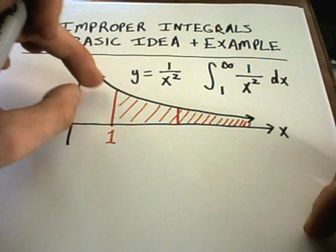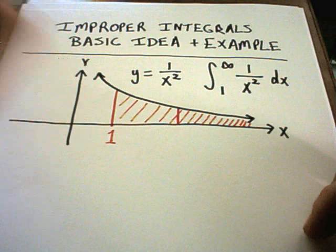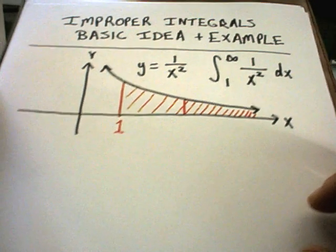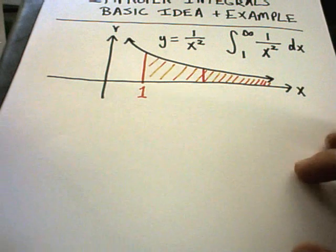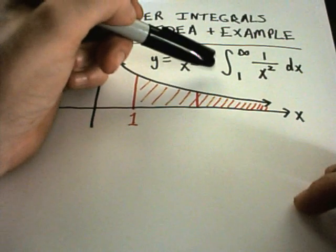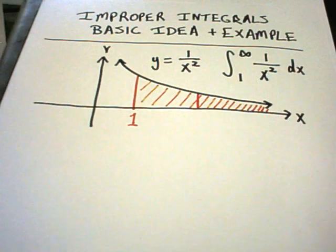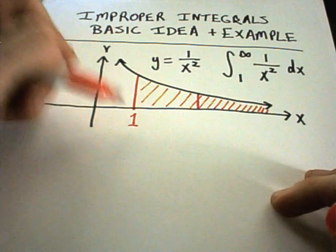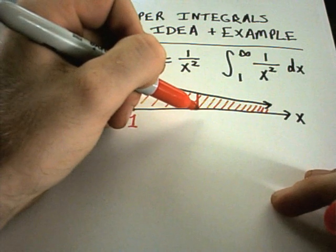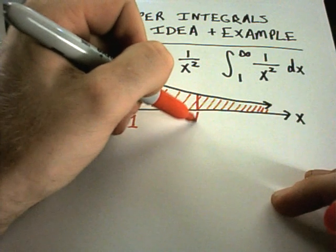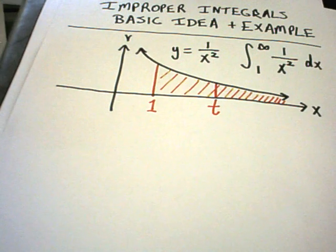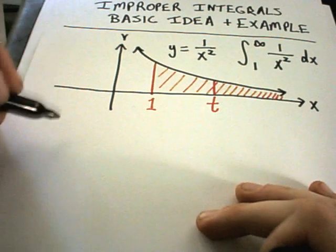We'll do one of those examples as well. So okay, well how do we deal with one of these limits? The idea is what we're going to do is we're going to go from 1 up to some specific value, usually most books like to call it t. Okay, so instead of integrating from 1 to infinity I'm going to turn this problem...